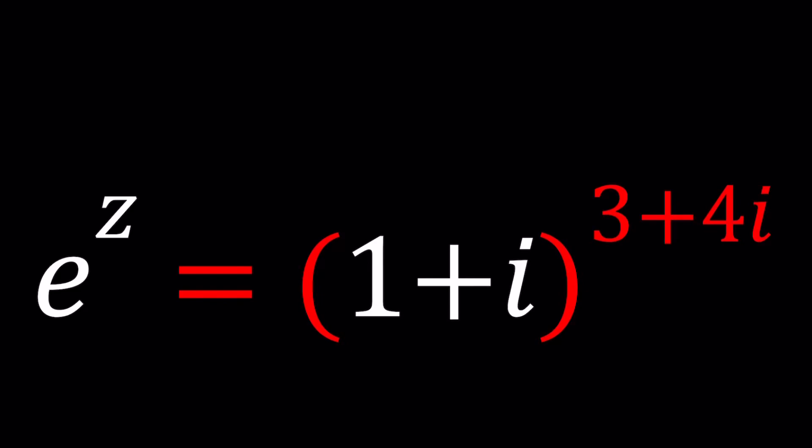Hello everyone, welcome to A plus B I. This channel is all about complex numbers and in this video we're going to be solving an exponential equation with complex numbers. We have e to the power z equals 1 plus i to the power 3 plus 4i. So this is complex exponentiation.